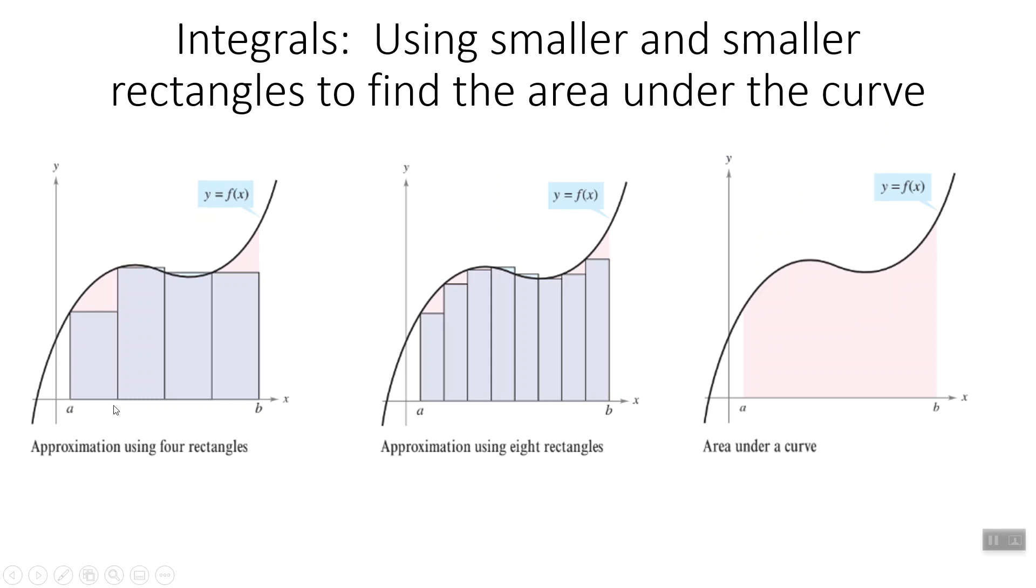The general idea is we make rectangles. We take this curve and make the space under it into rectangles. There's space missing here, extra space here—if we try more rectangles, it gets better. With an infinite number of rectangles, we get the perfect amount of area under the curve.